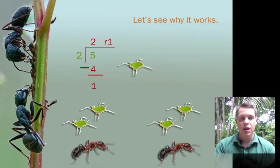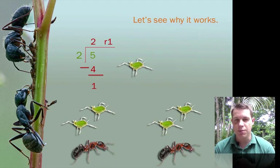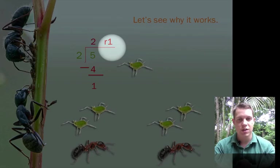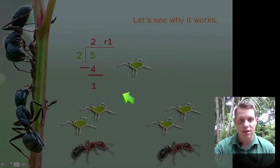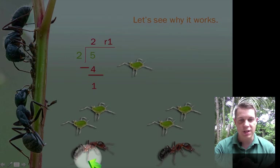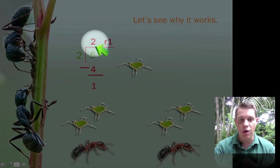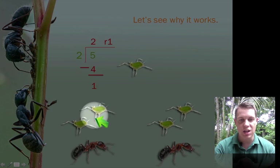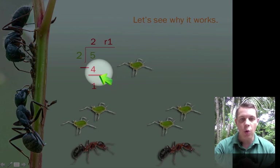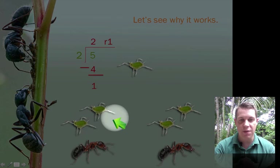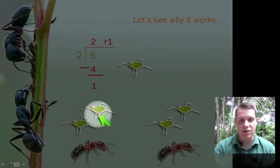And if we just review it, we can see that each one of these numbers has a very specific job in this problem. So first off, the 5 represents the 5 total aphids. The 2 represents the 2 ants. This 2, the quotient, represents that in each group there are 2 aphids.